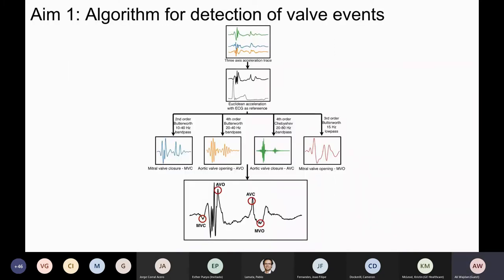All right, so the algorithm that was used to detect the valve events is a bit too complex to go into detail right now. But briefly, what we did was that we took the three-axis data from the accelerometer and converted it into a single Euclidean acceleration. We used standard filters and feature extraction methods to detect our four points of interest in each individual heart cycle. The four points of interest being the opening and closing of the mitral and aortic valve. And this was the first aim of our study.